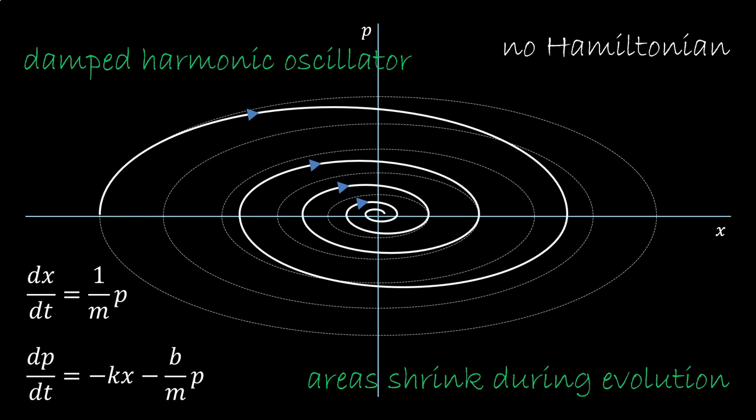Now compare this with a damped harmonic oscillator. Here all trajectories will eventually end up with zero momentum and zero position. That is a stable equilibrium. Areas around that point will shrink. The system cannot be Hamiltonian, and that's basically it.